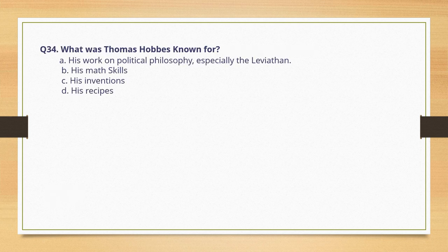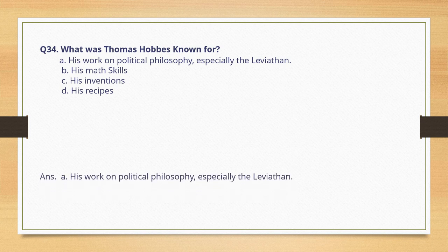What was Thomas Hobbes known for? Options: his work on political philosophy, especially the Leviathan; his math skills, his inventions and his recipes. The correct option is option A: his work on political philosophy, especially the Leviathan.